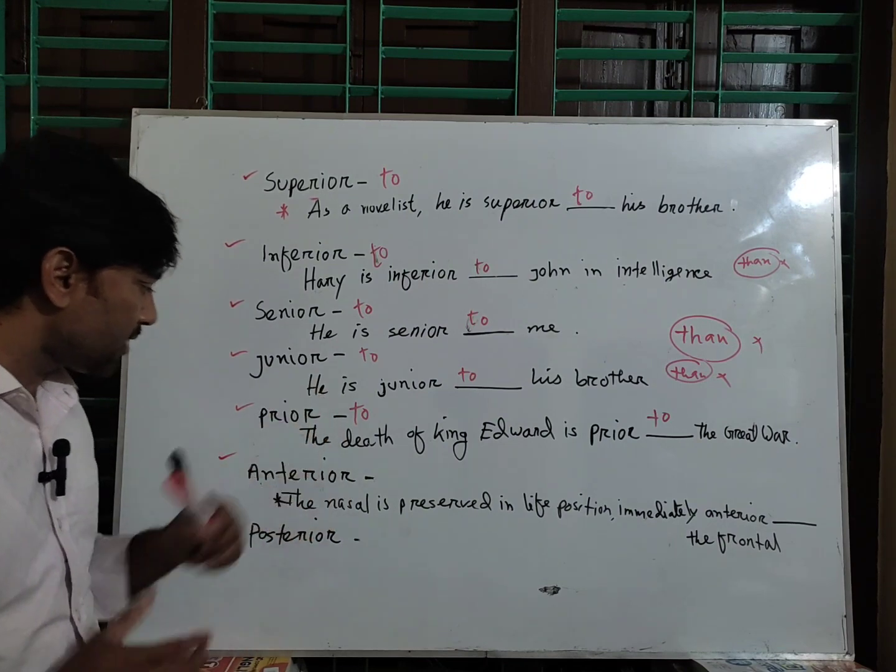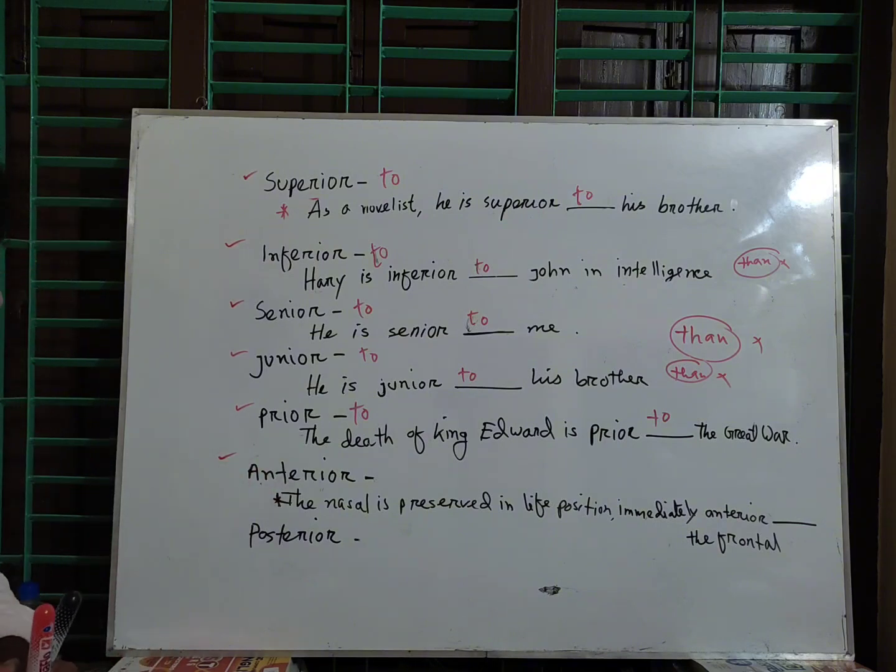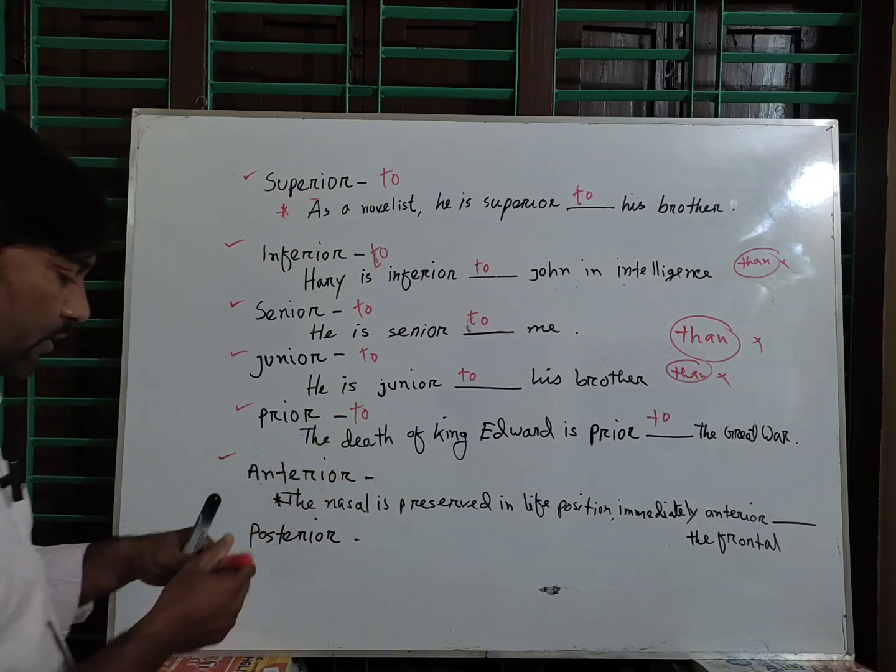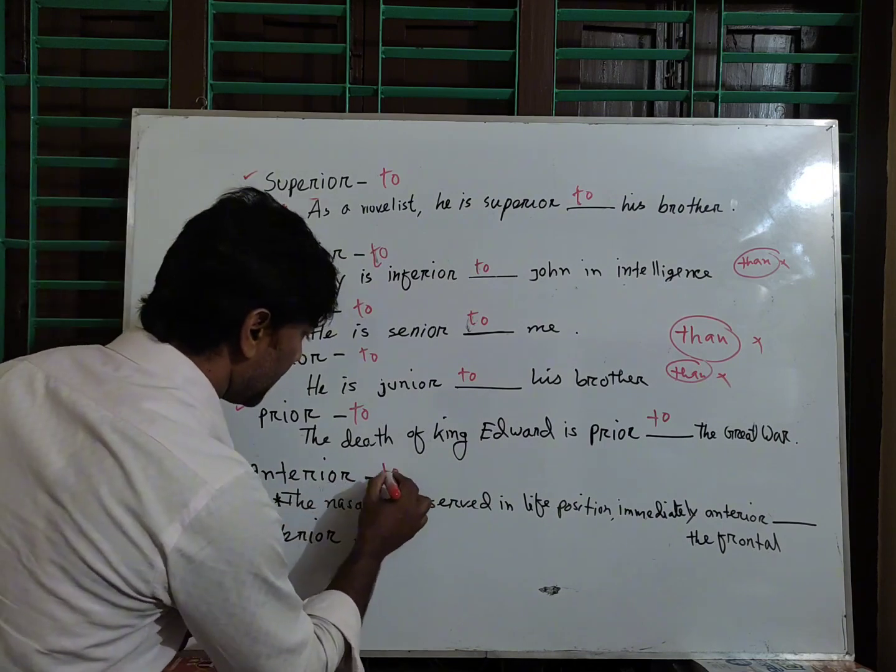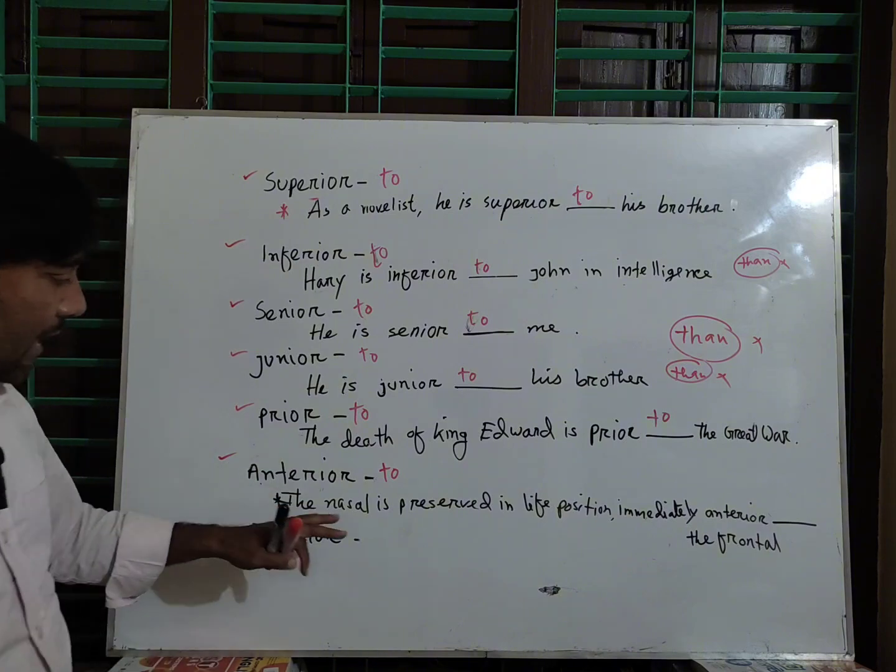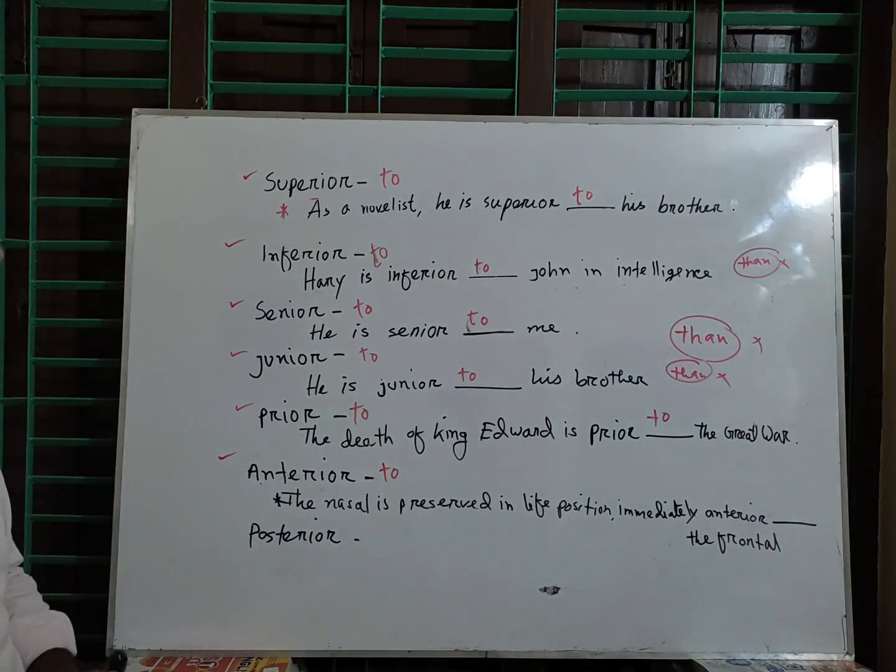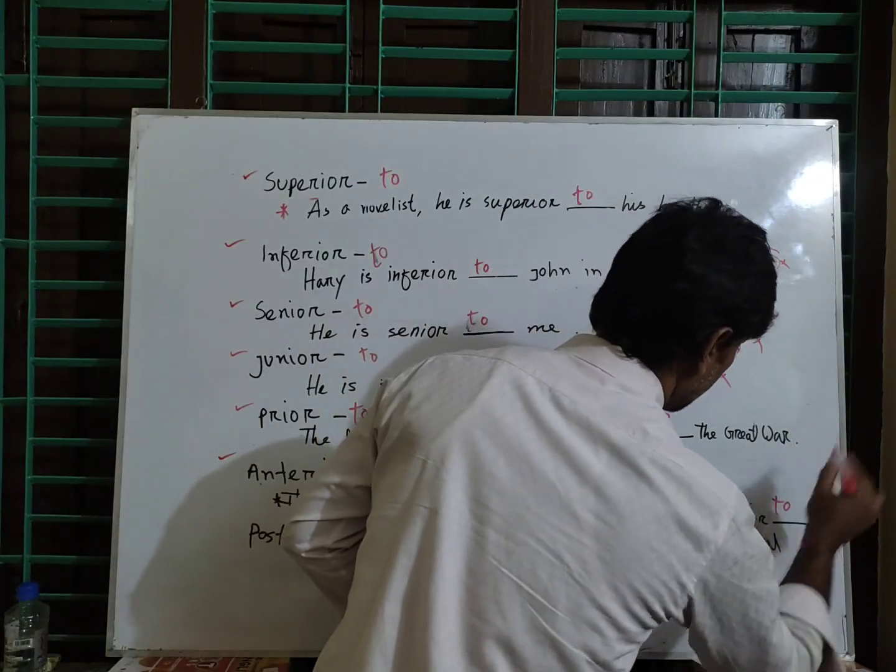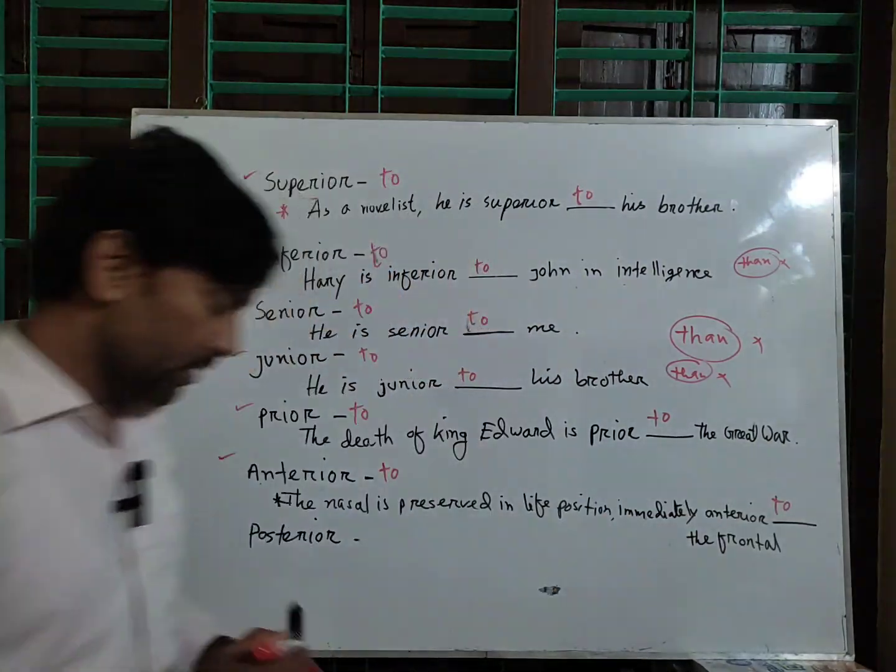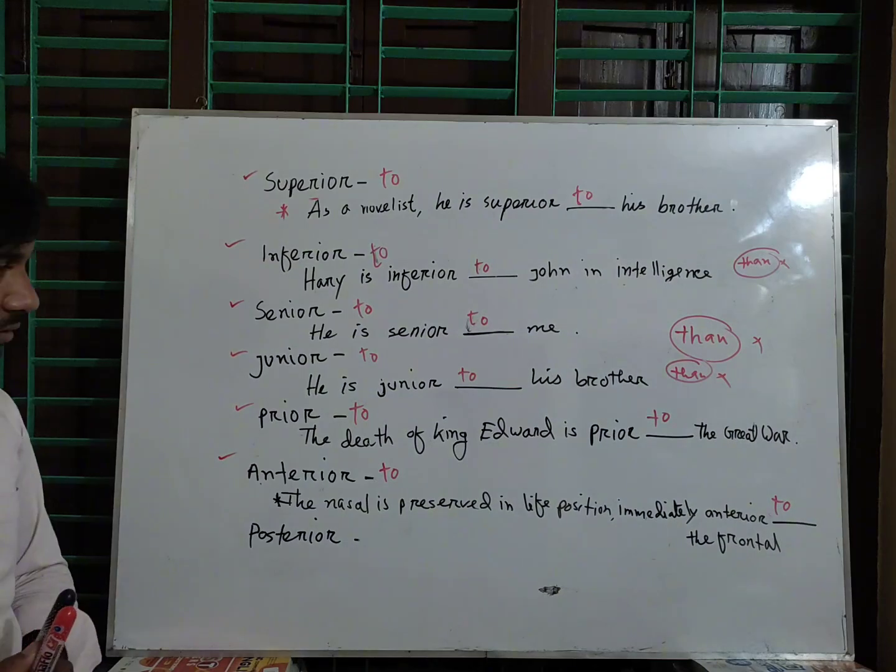Anterior. Anterior is a Latin comparative, so we should put 'to' after it, not 'than'. For example: The nasal is preserved in lip position immediately anterior to the front vowel.